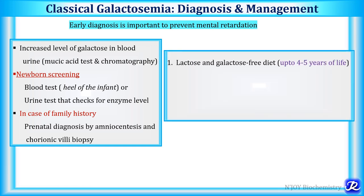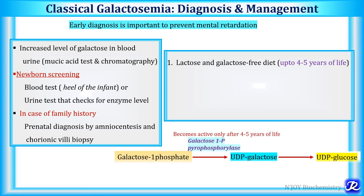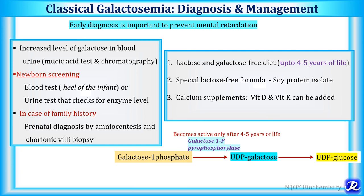Management includes giving a lactose and galactose-free diet to infants or children at least up to four to five years of life, because after that the enzyme galactose 1-phosphate pyrophosphorylase becomes active and can directly convert galactose 1-phosphate to UDP galactose, bypassing the need for GALT. Special lactose-free formula should be given, along with calcium supplements, vitamin D, and vitamin K. The patient should be monitored regularly with blood and urine tests.